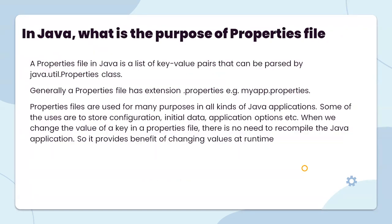Next question: in Java, what is the purpose of a properties file? A properties file in Java is a list of key-value pairs that can be processed by the java.util.Properties class. Generally, a properties file has the extension .properties — for example, myapp.properties. In Spring Boot, the properties file is declared as key-value pairs. Properties files are useful for many purposes in all kinds of Java applications.